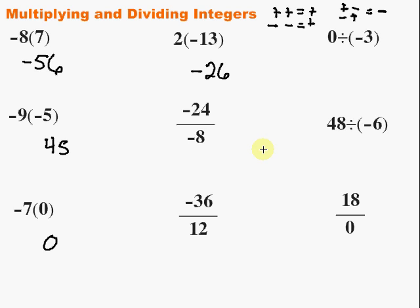Let's look at division. Same rules apply. Here, negative 24 divided by negative 8. Forget the signs for a second. 24 divided by 8 is 3, and negative divided by a negative is a positive.